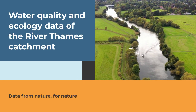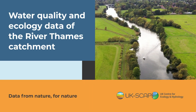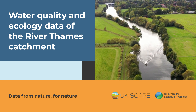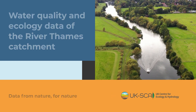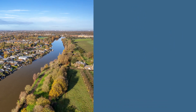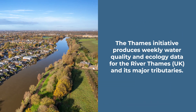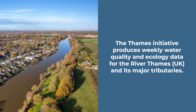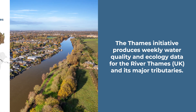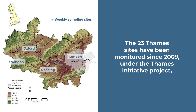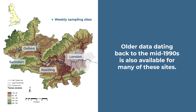This video is an introduction to using the UKCEH Thames Initiative dataset. The Thames Initiative produces weekly water quality and ecology data for the River Thames, UK and its major tributaries. The 23 Thames sites have been monitored since 2009 under the Thames Initiative project, with older data dating back to the mid-1990s also available for many of these sites.